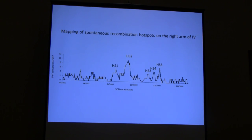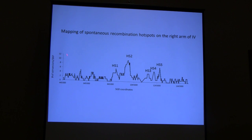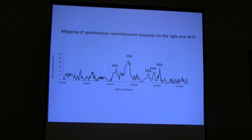With that introduction I want to discuss the mapping of events along chromosome 4. Almost all this work was done by Jordan St. Charles, a graduate student in the lab. This represents the mapping of about 140 crossovers and their associated conversion events. The y-axis shows how many times an individual SNP was involved in a conversion event. The distribution looks non-random: most events occur in the middle third of the arm, with fewer near the telomere and centromere. I've arbitrarily labeled hotspots 1 through 5 and will discuss hotspot 2 in more detail.